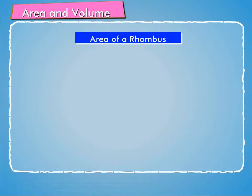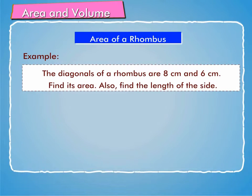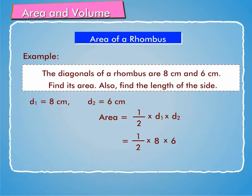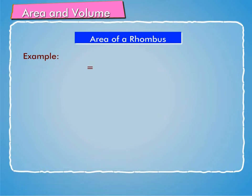Let us understand this by means of an example. The diagonals of a rhombus are 8 cm and 6 cm. Find its area and also find the length of the side. Here D1 = 8 cm, D2 = 6 cm. So, area = (1/2) × D1 × D2 = (1/2) × 8 × 6 = 24 square cm.